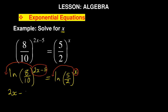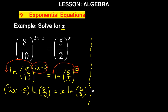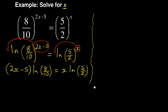What I'm going to have — and this must be in brackets, very important — is (2x minus 5) times ln(8/10) is equal to x times ln(5/2). The exponents have come down in front of the logarithm.